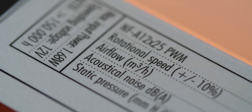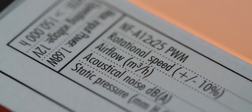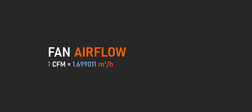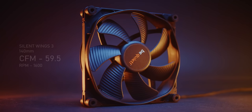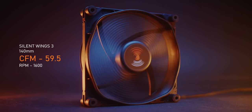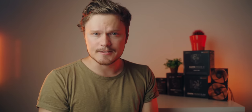Next up is airflow, which is one of the most important specs. It's usually measured in CFM — cubic feet per minute — and sometimes in cubic meters per hour in different regions. You can use a conversion rate to get CFM if it's not displayed. The higher the number, the more air the fan can move. For example, this 140mm Silent Wings 3 fan has a CFM of 59.5. Using the Dark Base Pro 900 Rev. 2, which has a volume of approximately 2.89 cubic feet, as an example: